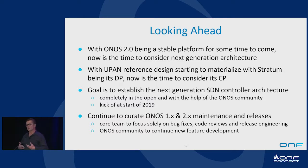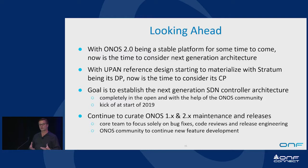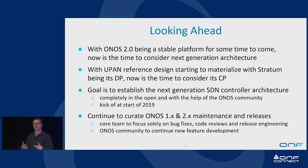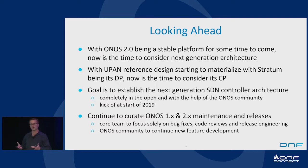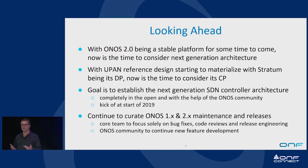We've currently released ONOS 2.0, which upgrades Java, upgrades Apache Karaf, and provides a nice stable platform on top of which a lot of functionality continues to be developed. Rather than throwing large changes into that fairly stable pool, the idea is to keep the existing architecture going for continued development, and use that opportunity to start looking ahead. Effectively, with Stratum — the data plane component of the overall UPAN reference design — the time is to ask: what is going to be the control plane? The next generation ONOS is going to be the control plane for UPAN.